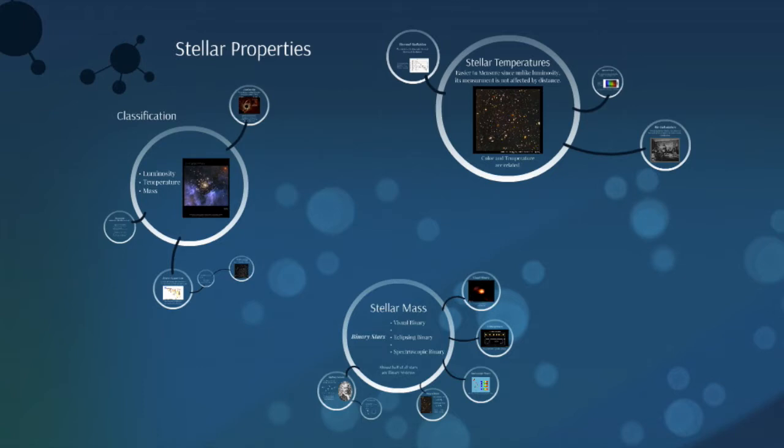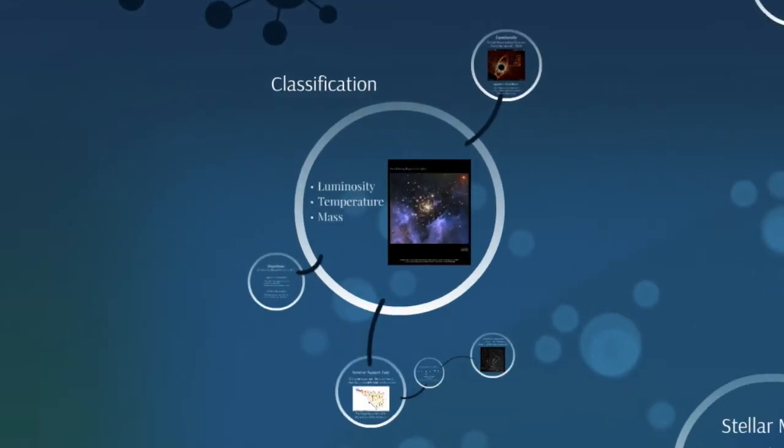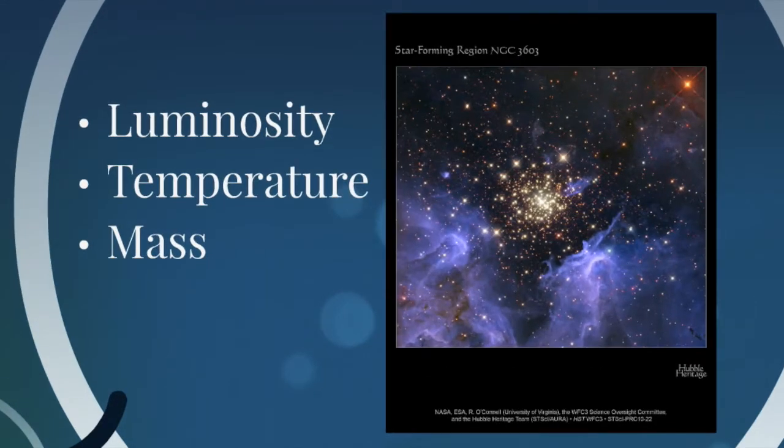And as it turns out, the one thing that is important is the properties of the stars. And there's just a few stellar properties that we need to know to classify the star. The three important ones that we'll look at are luminosity, temperature, and mass.